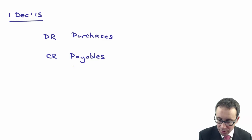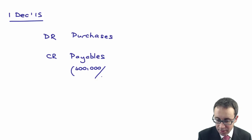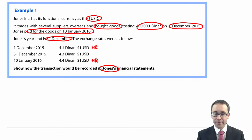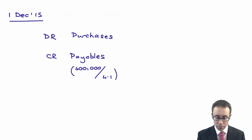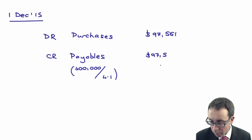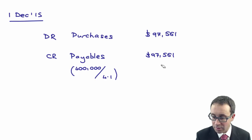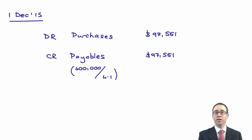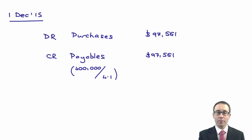The question is: with how much? It's 400,000 dinars. The rate in place on that date was 4.1 dinars to the dollar. So 400,000 divided by 4.1 gives $97,561. That is the amount of dollars recorded in Jones's financial statements — the initial recognition. Debit purchases, credit payables with $97,561.